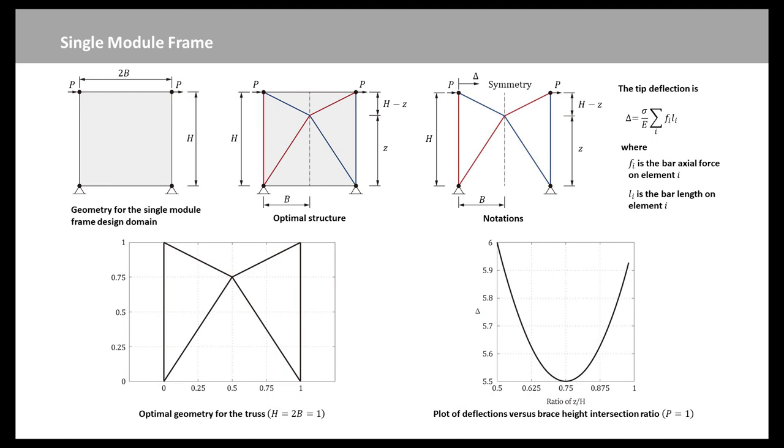The discrete members are shown in this slide. The intersection of the bracing was constrained to move along the center line of the module due to symmetry. The height ratio z over h was varied from 0.5 to 1, z being the distance of the brace work point from the base, and the corresponding tip deflection was calculated.